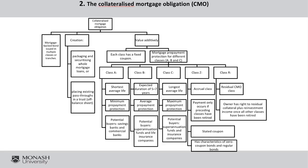Now let me go to the second vehicle, which is the CMO — collateralized mortgage obligation. It's basically the same as the pass-through, except you take the pass-through and break it into classes: Class A, Class B, Class C, Class Z, and Class R. Why do we do that?